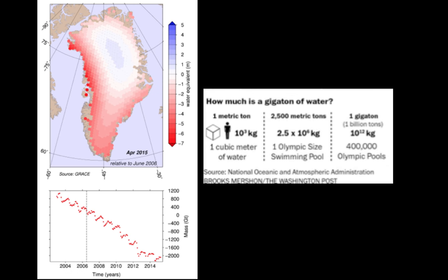Greenland is another area that's melting faster. The red areas indicate a loss of ice, particularly from the margin of the Greenland ice sheet. This plot indicates the loss of ice from Greenland in gigatons — one gigaton is about 400,000 Olympic pools of ice. We are talking about 1,600 to 2,000 gigatons of ice loss across Greenland.